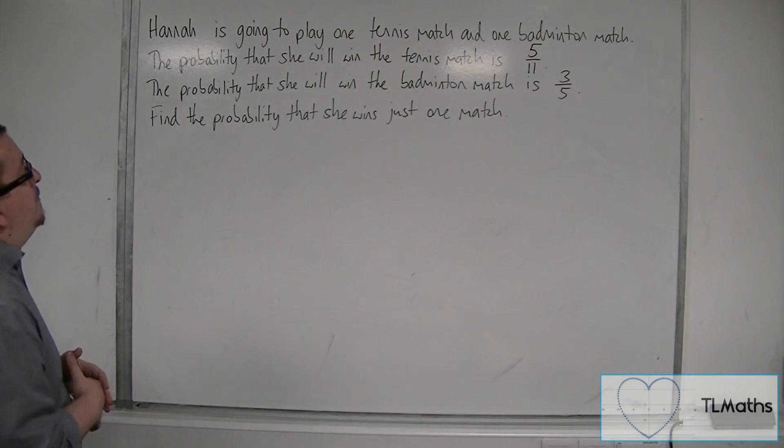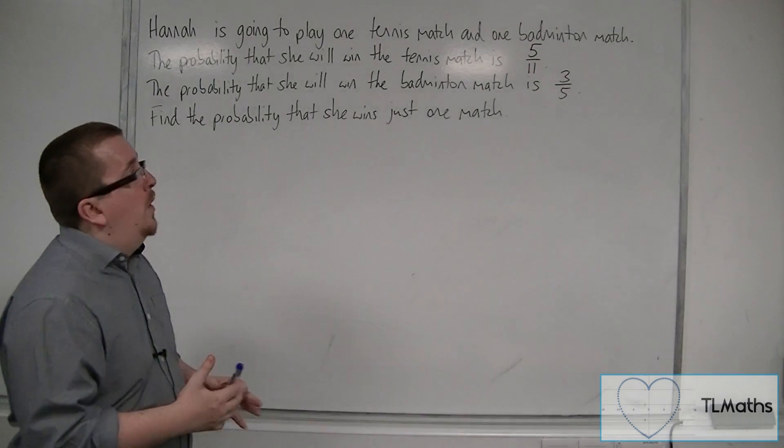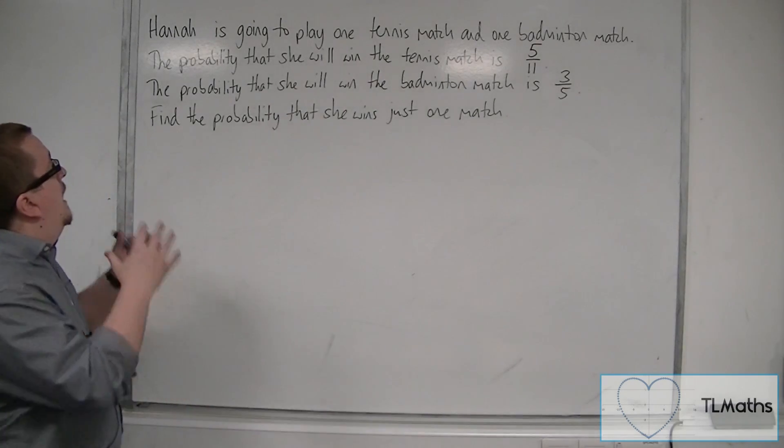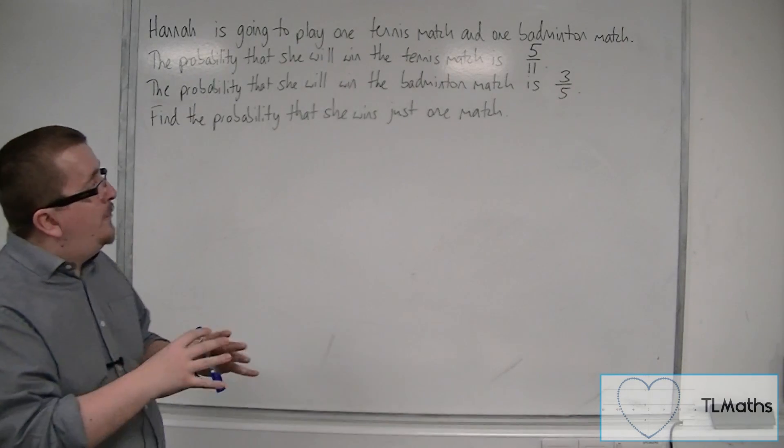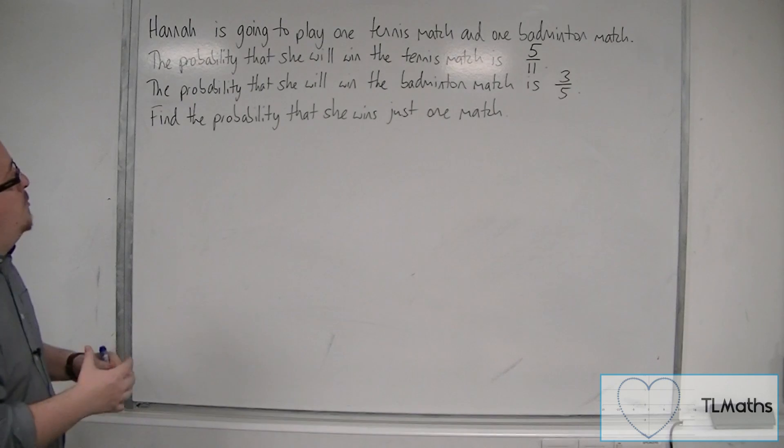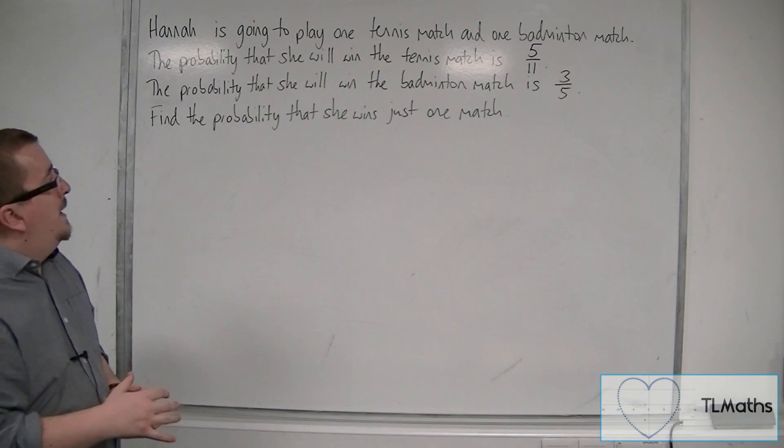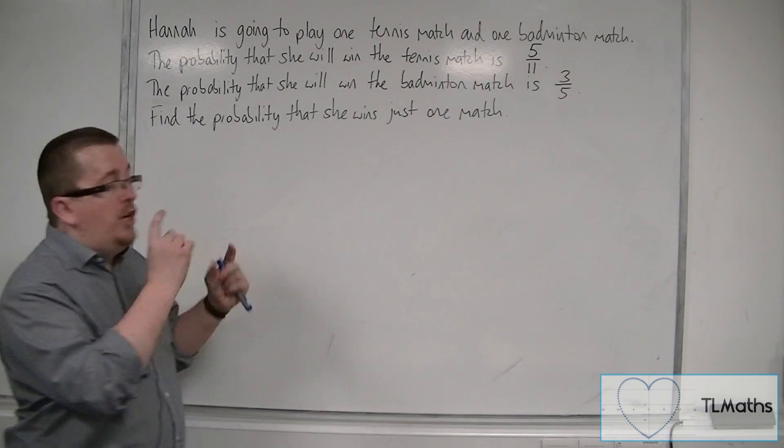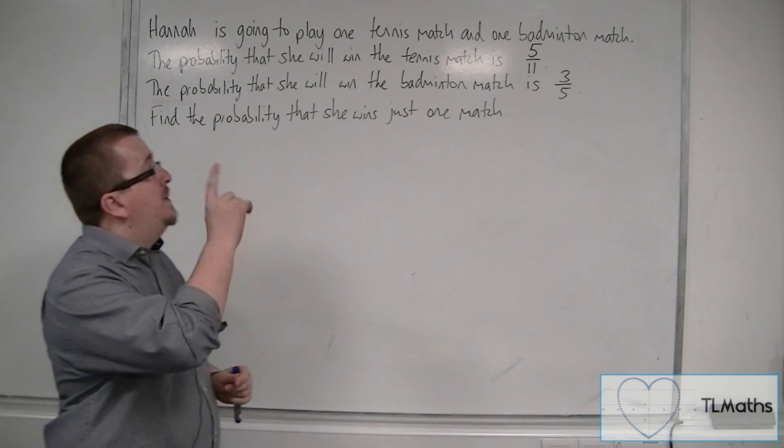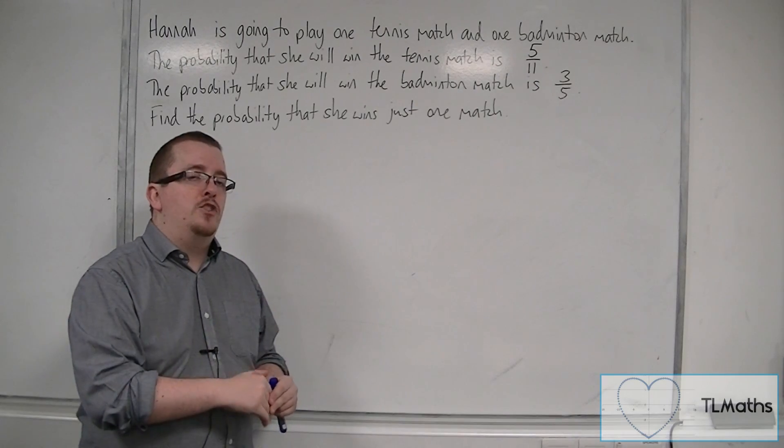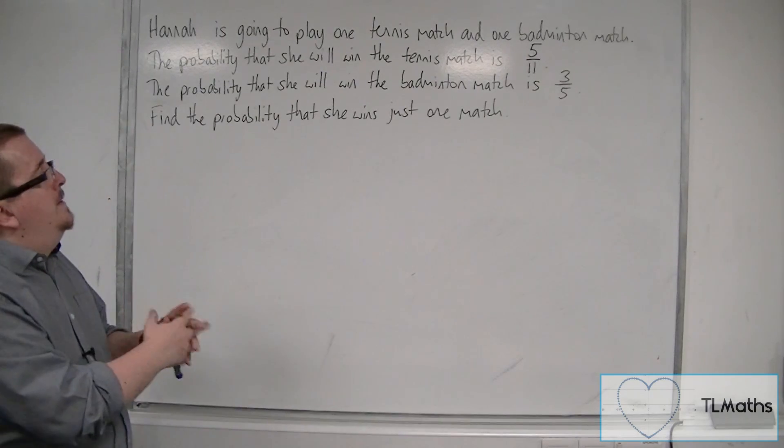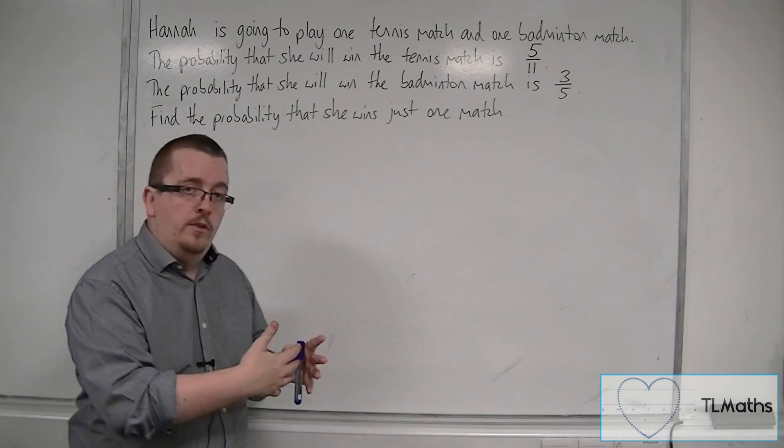Hannah is going to play one tennis match and one badminton match. The probability that she will win the tennis match is 5 elevenths. The probability that she will win the badminton match is 3 fifths. Find the probability that she wins just one match. It can either be a tennis match or a badminton match, but she can't win both or neither.